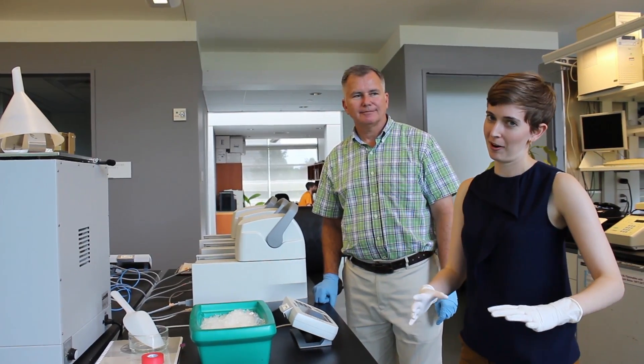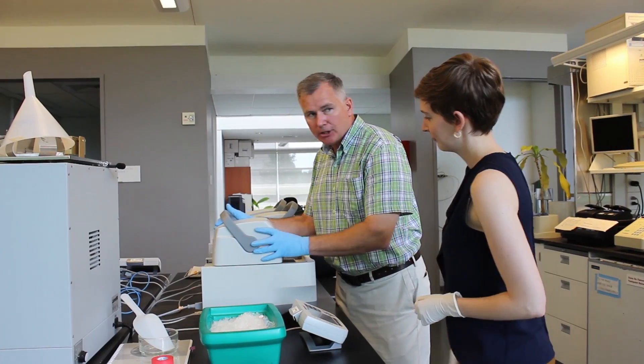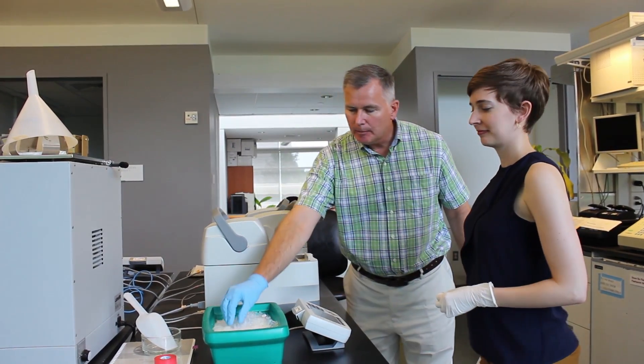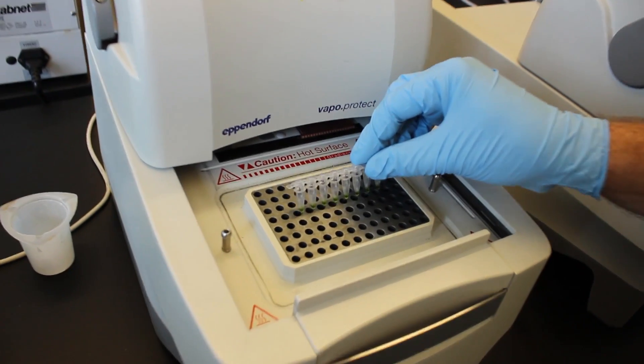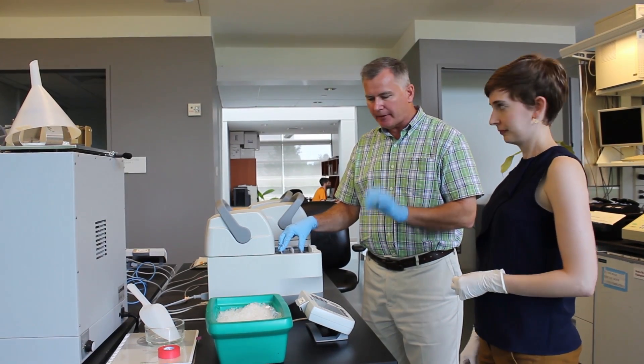Now we're ready to actually run the PCR reaction and we'll be using a thermocycler to do that. And it's really just a precision machine that allows us to place the samples into a series of wells and the machine goes from different temperatures very quickly and very precisely.